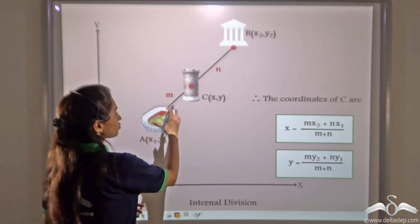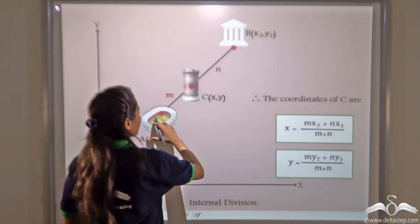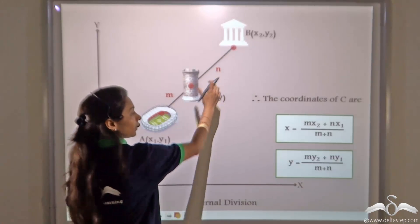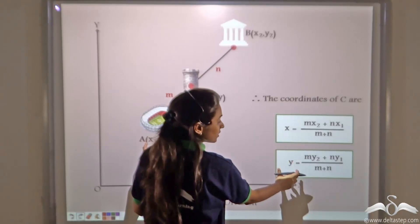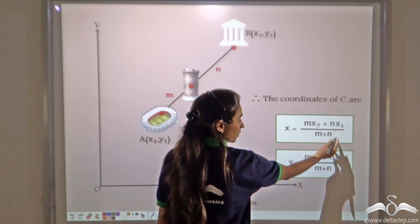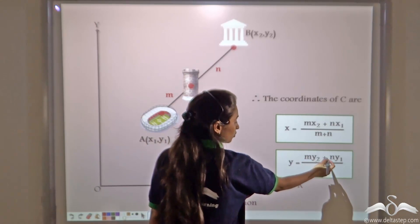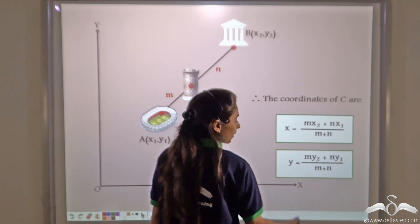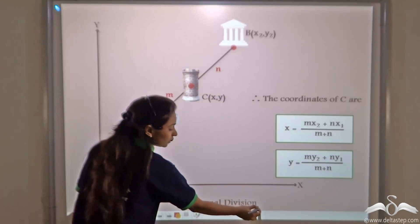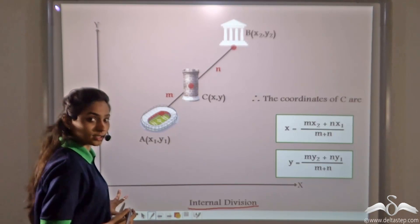You already know how to calculate the coordinates of a point which divides the line joining two other points in the ratio M and N, using the section formula where the x-coordinate is (Mx2 + Nx1)/(M+N) and the y-coordinate is (My2 + Ny1)/(M+N). This is called the section formula for internal division.